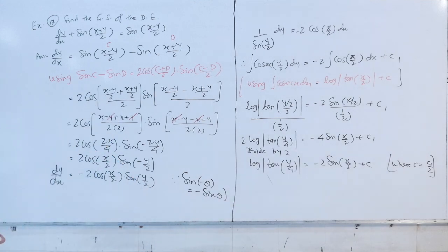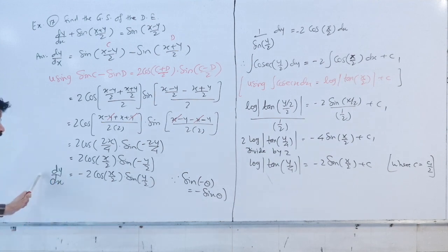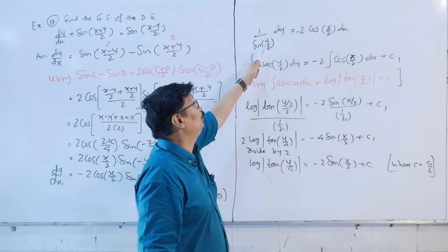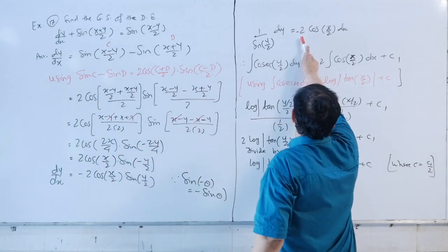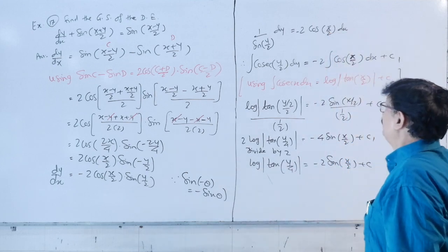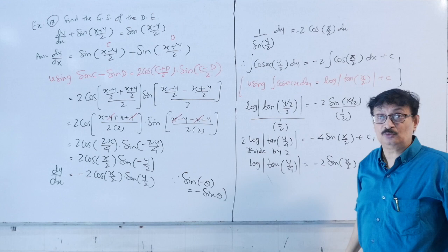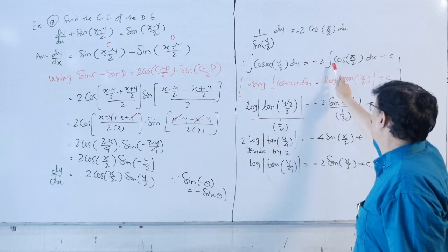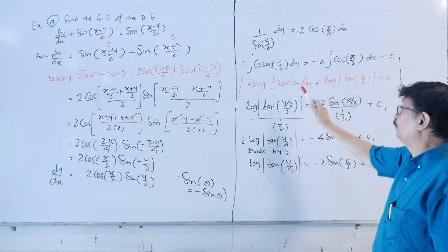Now applying the variable separable method: separating variables gives cosec(y/2) dy equals minus 2 cos(x/2) dx. Integrating both sides: integral of cosec(y/2) dy equals minus 2 integral of cos(x/2) dx plus C.